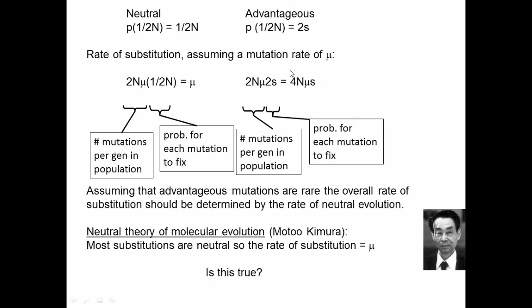For mutations creating new advantageous alleles, 2N·mu mutations arise per generation, each with a fixation probability of 2s. When you multiply, things don't cancel — you get 4N·mu·s. So the rate of substitution for advantageous alleles is 4Nμs, which goes up when the population is bigger and when the selective advantage of new alleles is bigger.